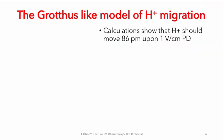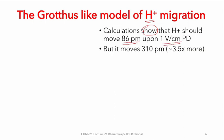We invoke the Grotthuss-like model of migration for H⁺ ions. Interestingly, calculations indicate that the H⁺ ion should move only about 86 picometers when a potential difference of one volt per centimeter is applied. However, when measured electrolytically, we find that it moves about three and a half times more than what is anticipated.